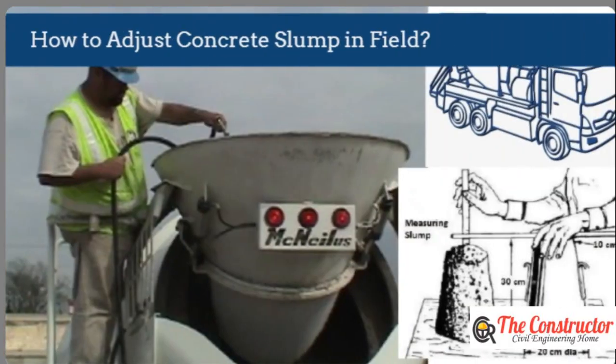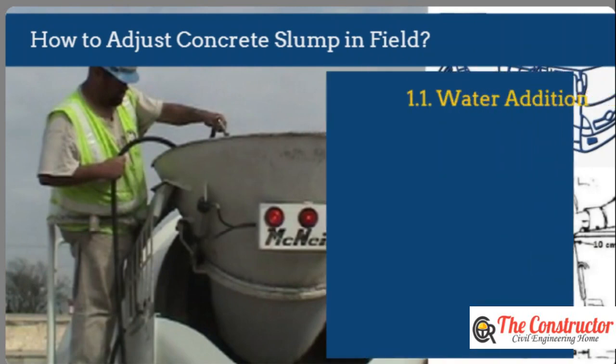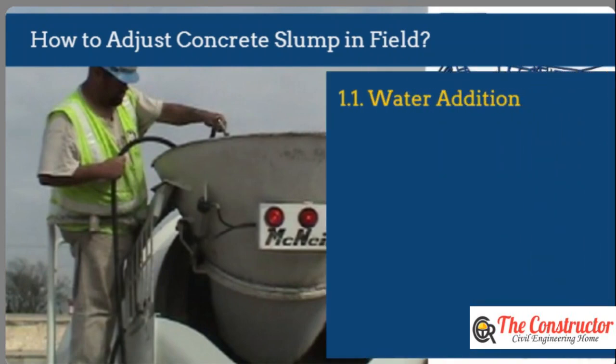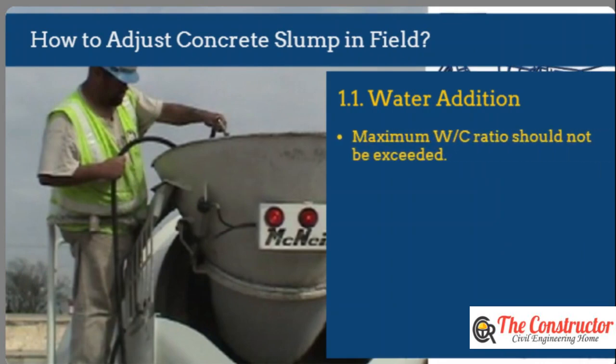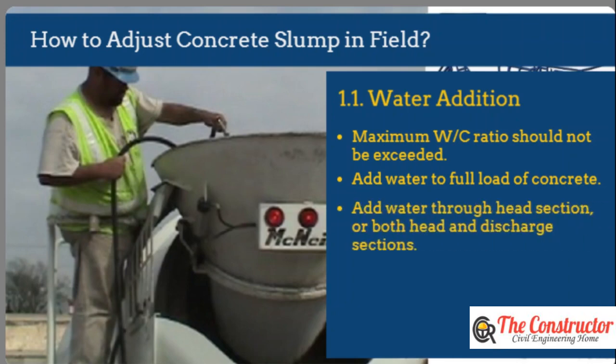If the slump is less than the minimum specified range when the concrete arrives on site, water can be added to increase the concrete slump; nonetheless, the maximum acceptable water-cement ratio must not be exceeded. The water should be added to the full load of concrete. Avoid adding water to the middle or the end of the concrete batch. Add water through the head section of the drum or both head and discharge sections. The use of a hose to spray additional water on concrete is not recommended.